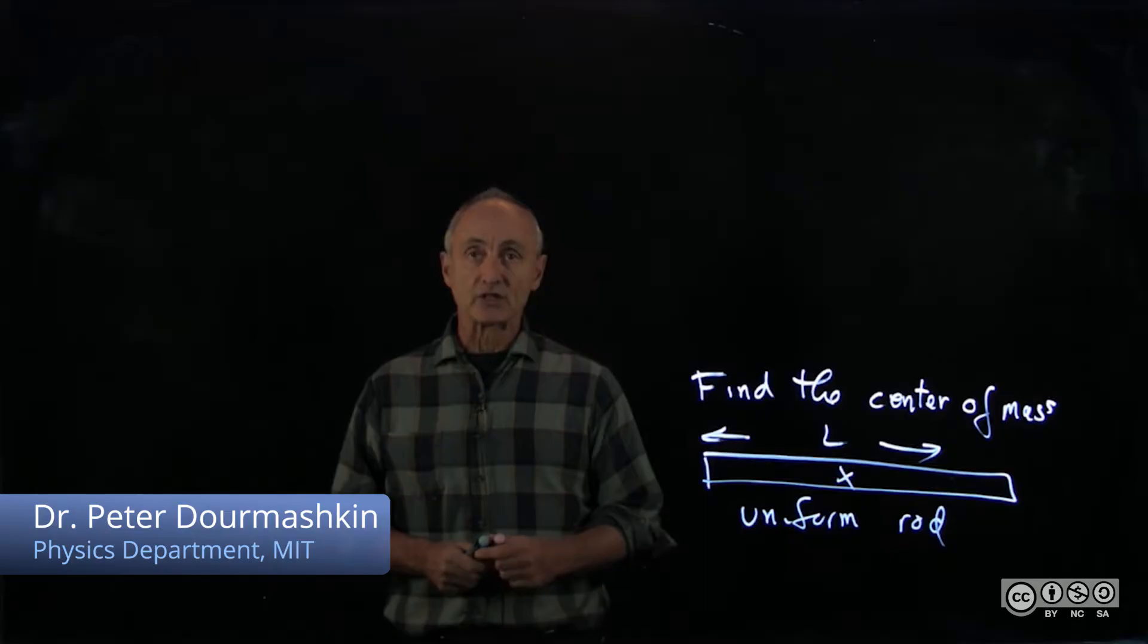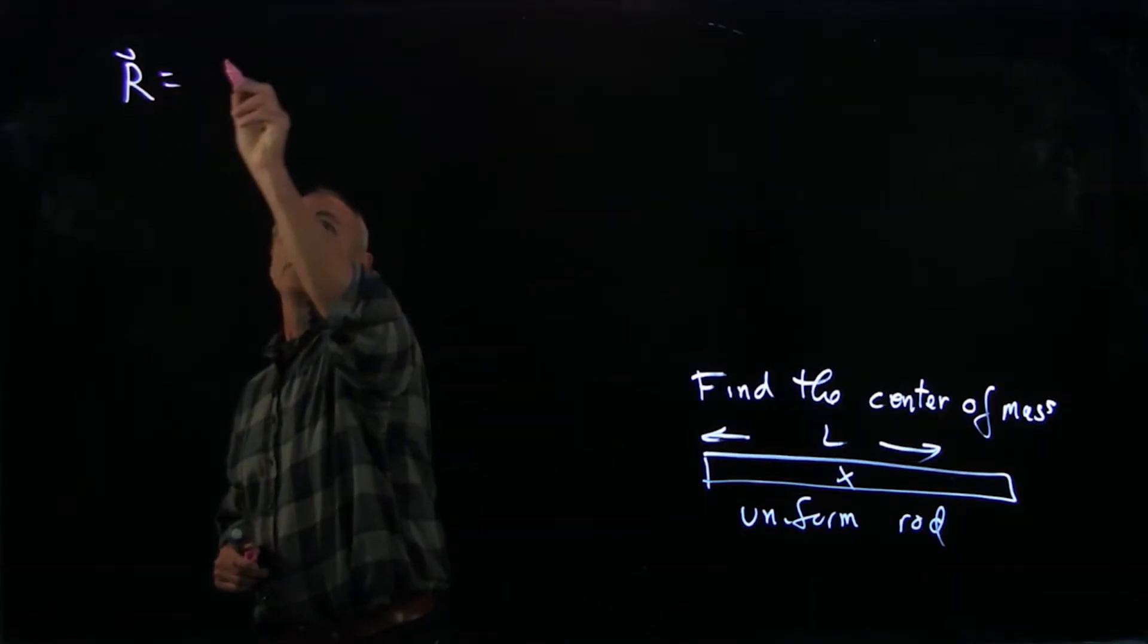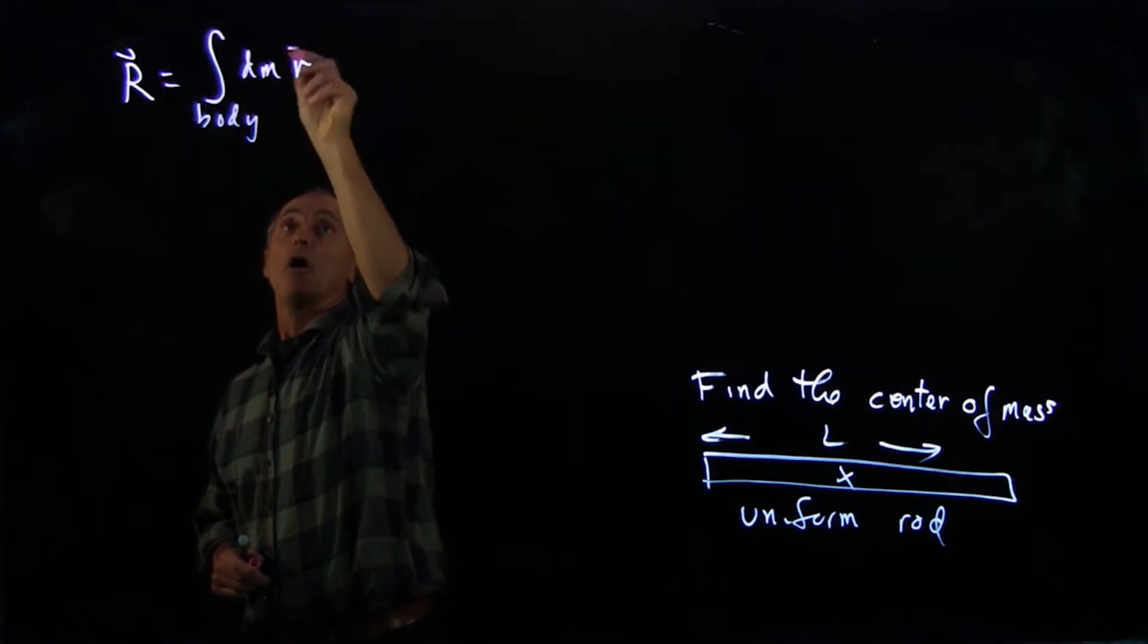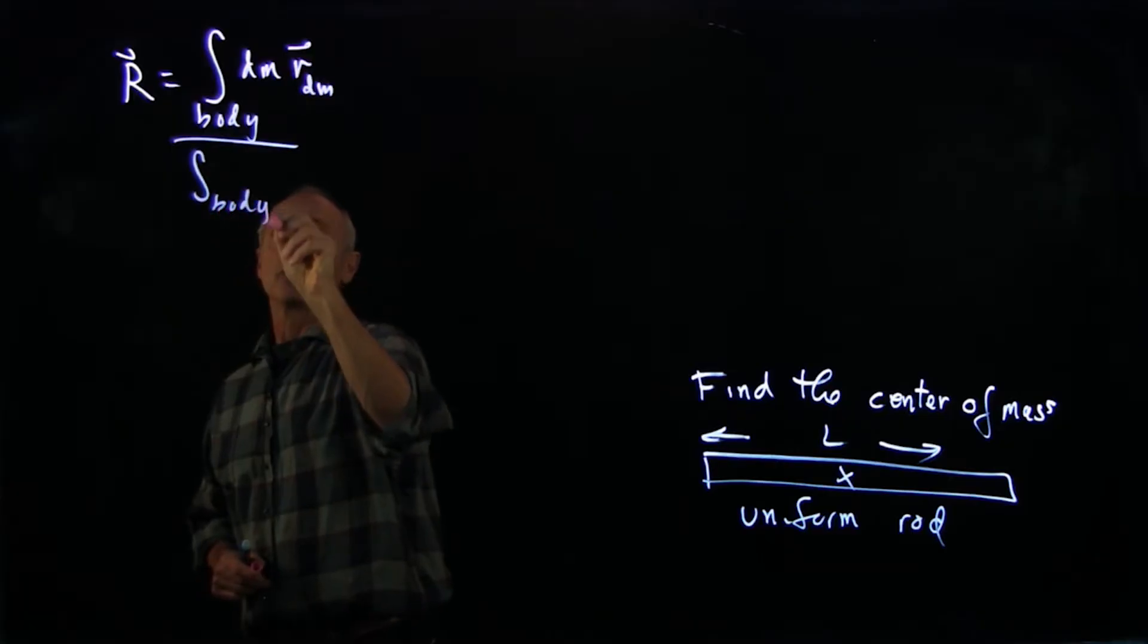So now we want to find the center of mass of a uniform rod, and we have the result for a continuous body, which is an integral over the body of dm times r to that mass element dm divided by an integral of dm.